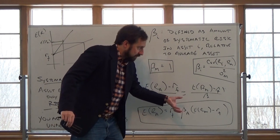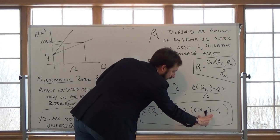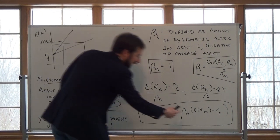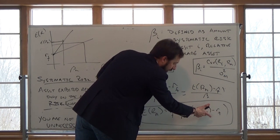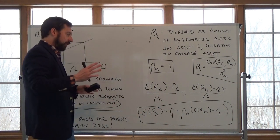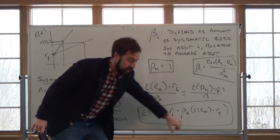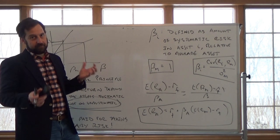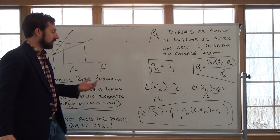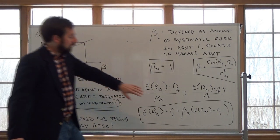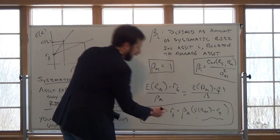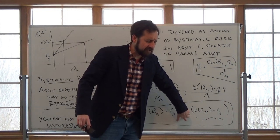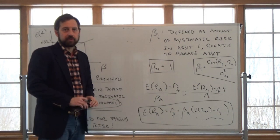The CAPM says the expected return on any asset equals the pure time value of money (the risk-free rate), plus the amount of systematic risk (beta) times the reward for bearing that risk (market risk premium). The only asset-specific factor needed is the asset's beta — the risk-free rate and the market risk premium are the same for all assets. Once you know an asset's systematic risk, you can compute its expected return. That's the powerful and central takeaway of the CAPM.